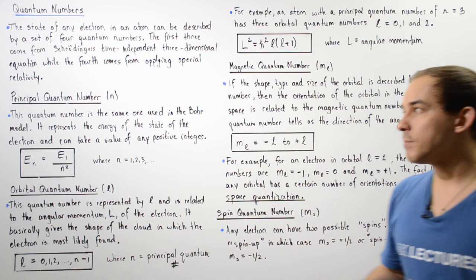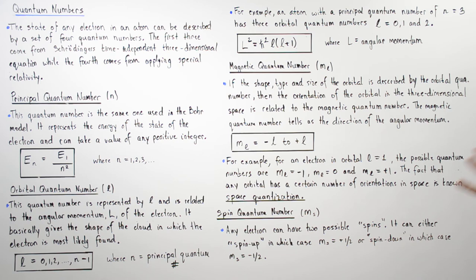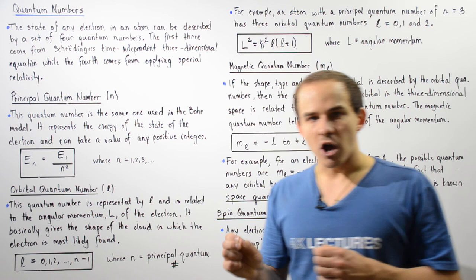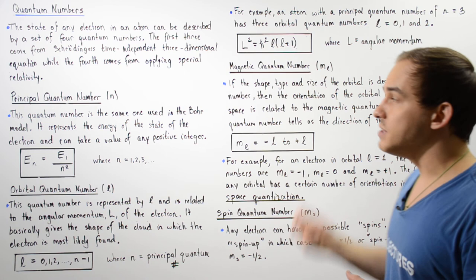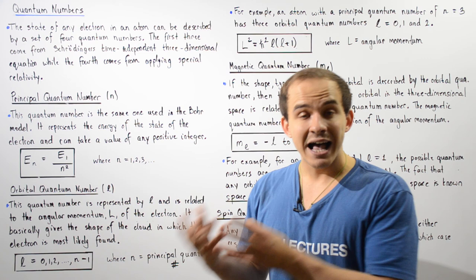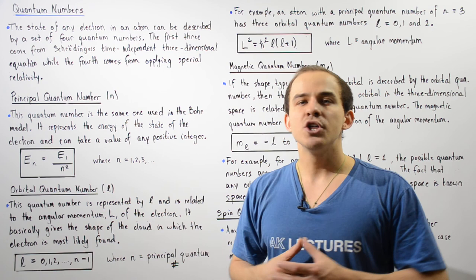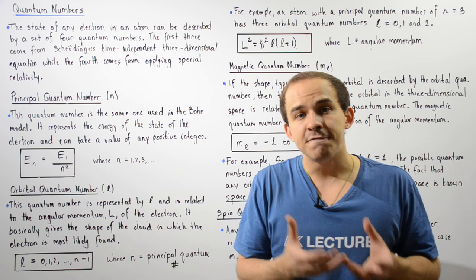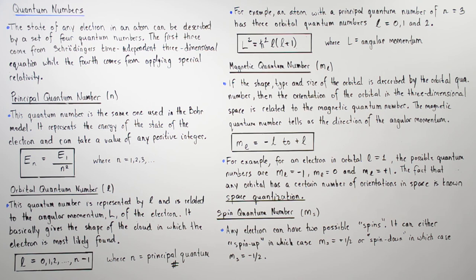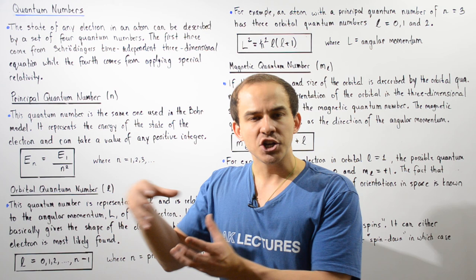In a future lecture, we'll discuss the spin quantum number and its interpretation in more detail. Any electron within any given atom can be described by a set of four unique quantum numbers. The principal quantum number tells us the energy level of our electron. The orbital quantum number tells us the shape of the electron cloud, also known as the orbital. The electron cloud designates the probability of finding our electron within a specific region of space around our atom. The magnetic quantum number tells us the orientation of that orbital in three-dimensional space.